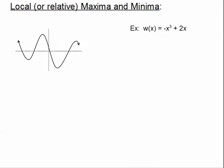If you can flip over to this part, we're talking about local maxima and local minima. Some textbooks and some teachers might refer to these as relative maxima and minima. It's the same thing — local or relative maxima and minima. Basically, what that means is we're trying to find a locality or a relative area where there is a maximum point. Maxima is just the plural of maximum.